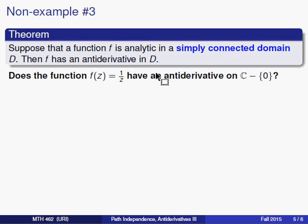Now as we move into our third non-example we know that we need to check the conditions. So let's take a look at the function 1 over z. We know that it does not have a simply connected domain. It's only defined in the complex numbers minus 0 and that's not simply connected. But just because we failed the hypothesis doesn't necessarily mean that we fail the conclusion. So we might ask does that function have an antiderivative? Could it still have an antiderivative?